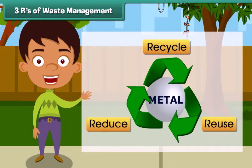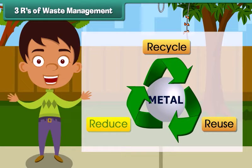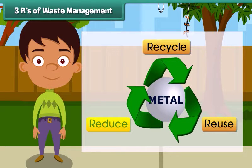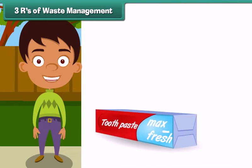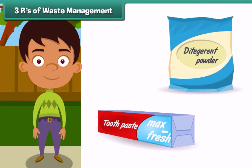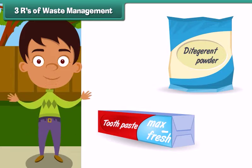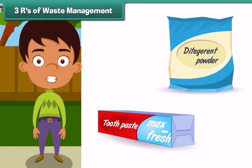The third R stands for Reduce. Reduce means to decrease the use of substances that harm the environment. For example, we must buy larger packs of toothpaste, dishwasher detergents, cereals, etc., and reduce the quantity of packaging material.